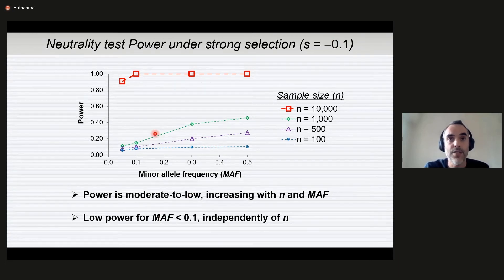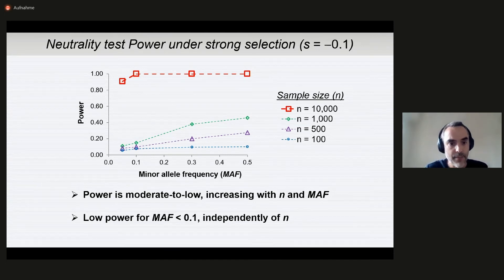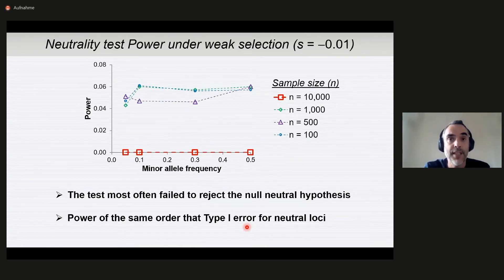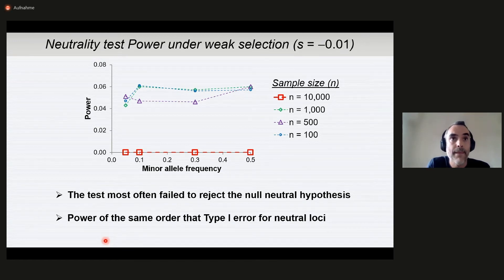Here in the top you have, just for reference, an exhaustive sampling scenario where we sample the entire cohort. That's why we have almost 100% of power. In this other, we have decreasing sample sizes. As you can see, the power is moderate to low and it increases with the sample size and with the minor allele frequency. We have in general low power or very low power when the locus is close to fixation and this is independent of the sample size. If we have weak selection, things get much worse. The test most often fails to reject the null hypothesis of neutrality. And what is worse, the power is of the same order as the false positive rate under neutrality.